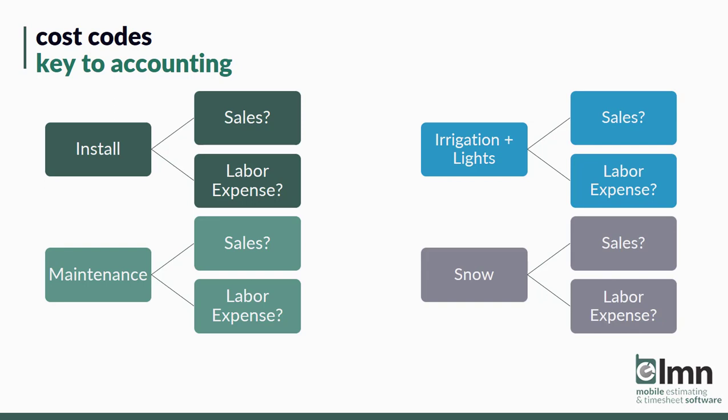Here's a simple example on screen. I've created four cost codes: install, maintenance, irrigation and lights, and snow. For each one of those cost codes I'll be able to see what I've sold in sales, because LMN estimates or invoices will book the revenue to those correct sales accounts. When we book timesheets in LMN, the cost of every hour will get booked to the labor expense for the right department. At the end of the year I'll be able to look at each department and figure out which ones are making money. There are more details about syncing QuickBooks and LMN in the suite of videos — this is just meant to be an overview.